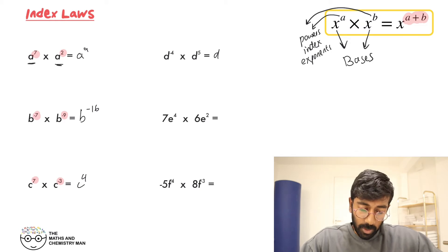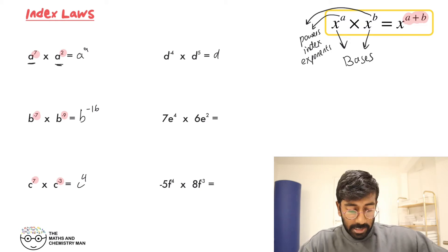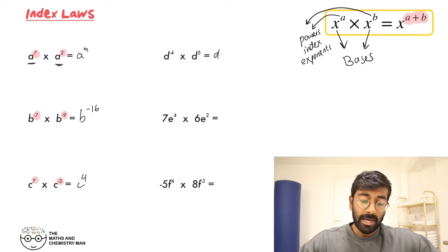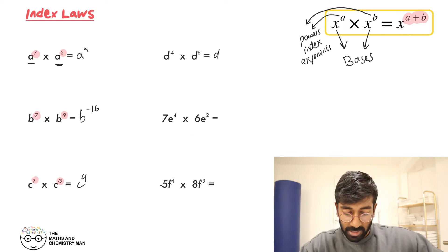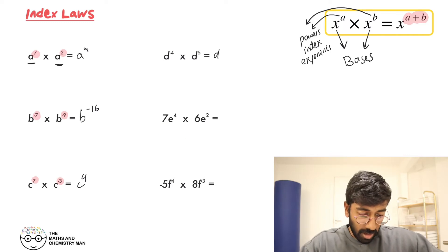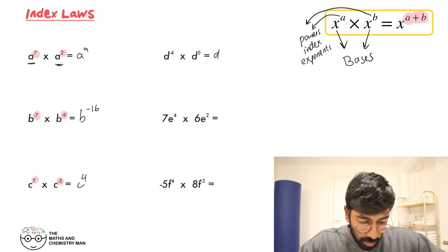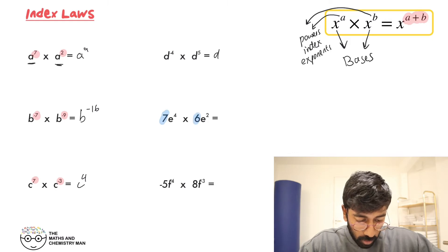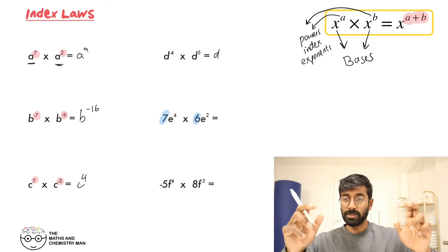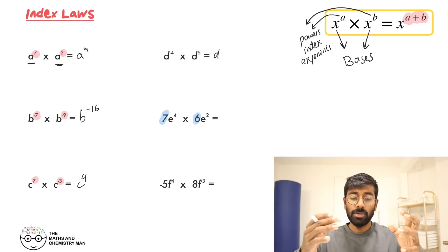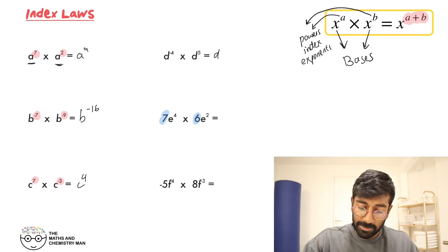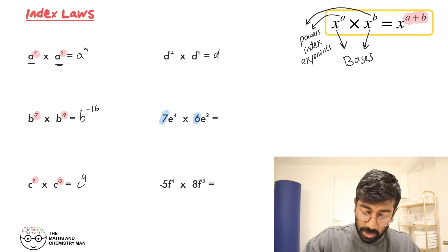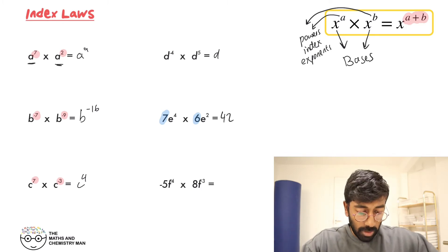Next, we've got a few numbers thrown in as well — a 7 and a 6 at the start. Those are your ordinary numbers, so you just do 6 times 7 and treat them normally — 6 times 7 is just 42. Then have a look at your powers: E to the power of 4 times E to the power of 2.